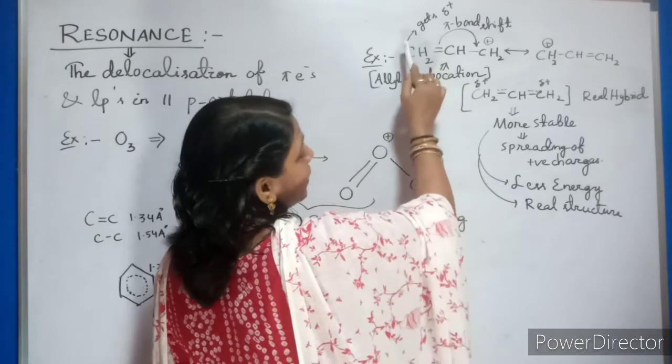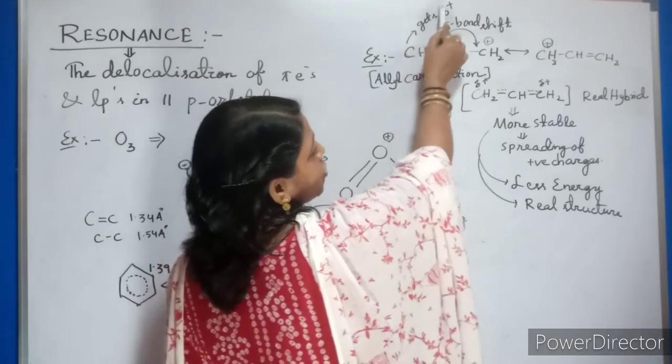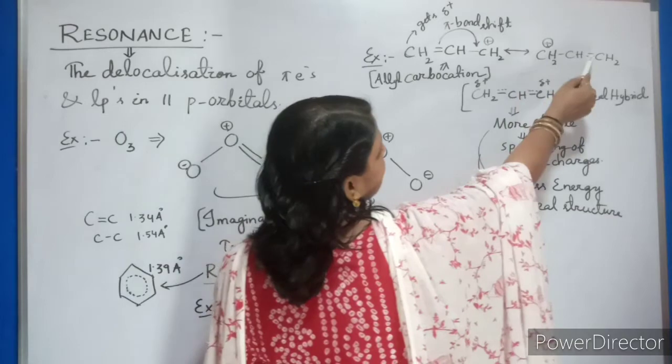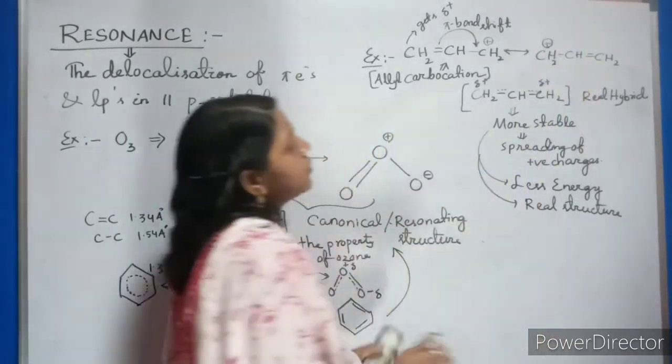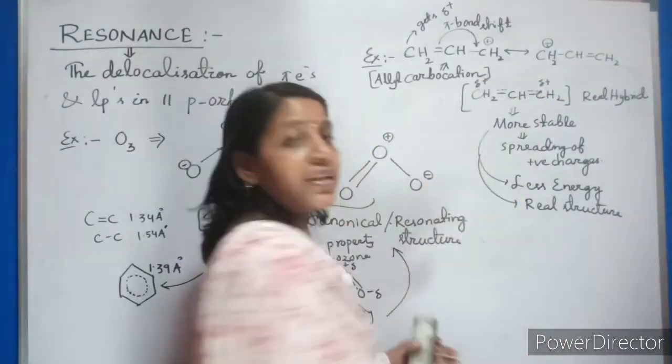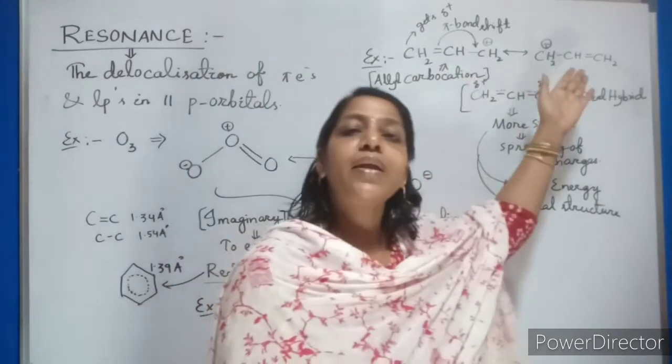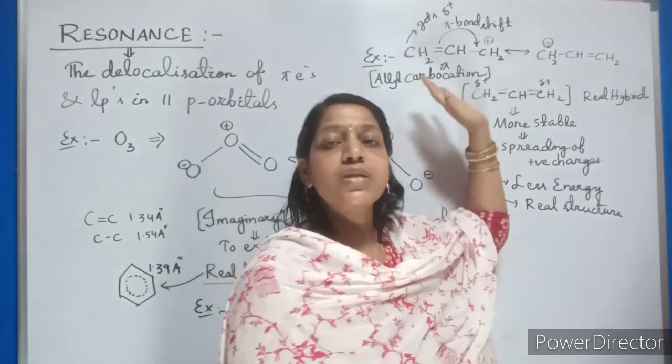At that time what will happen? Your carbon will be getting the partially positive charge, this carbon. Now it is getting double bond, that charge is removed. This is the way you are finding this is nothing but your canonical or imaginary or resonance structure.